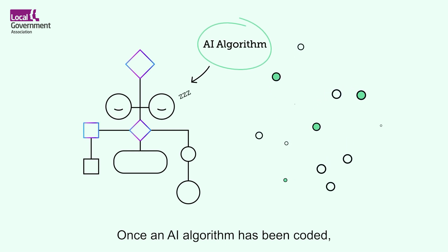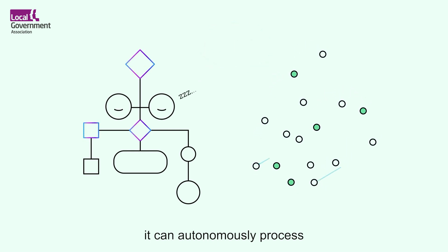Once an AI algorithm has been coded, it can autonomously process data to identify patterns and relationships in the data.